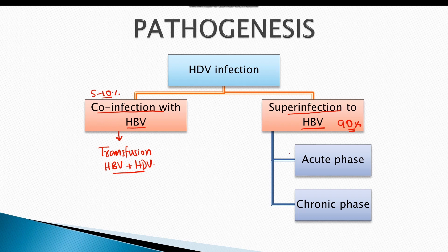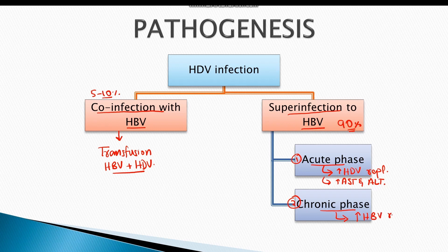The super-infection has two phases. The first is the acute phase and the second is the chronic phase. In the acute phase, there is increased hepatitis D virus replication and ALT and AST levels are also increased. In the chronic phase, there is increased hepatitis B virus replication, a decrease in hepatitis D virus replication, and in these cases the disease mostly progresses to liver cirrhosis.